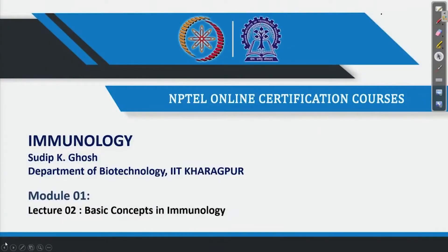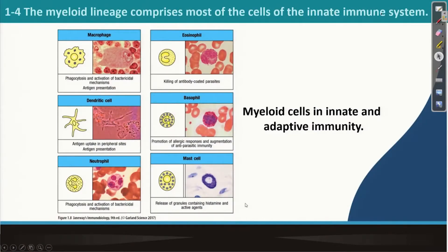Welcome back to my second lecture. In the last lecture, we ended up discussing response time and adaptive and innate immunity. Now, we are going to speak about the myeloid lineage, which comprises most of the cells of the innate immune system.